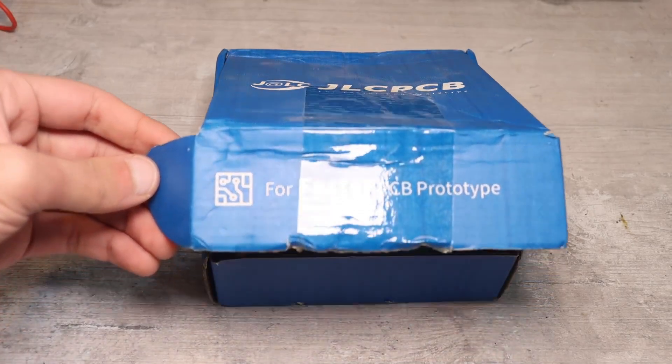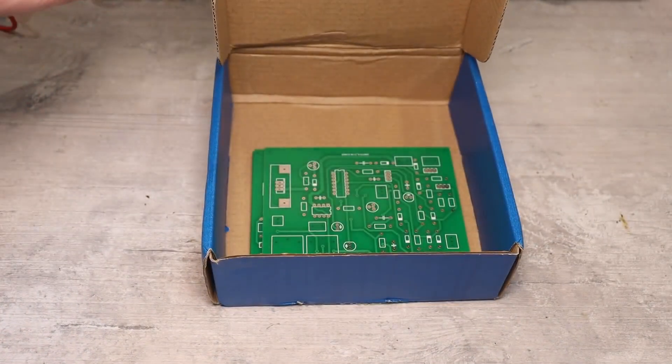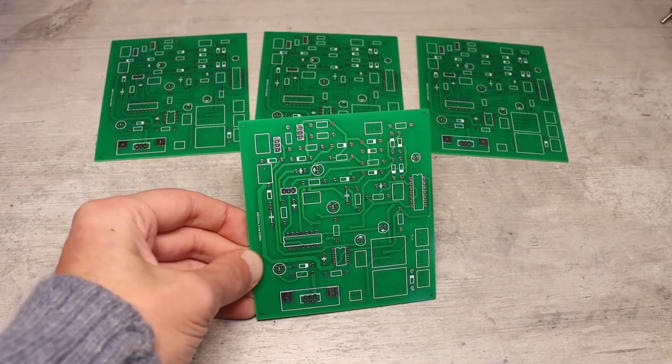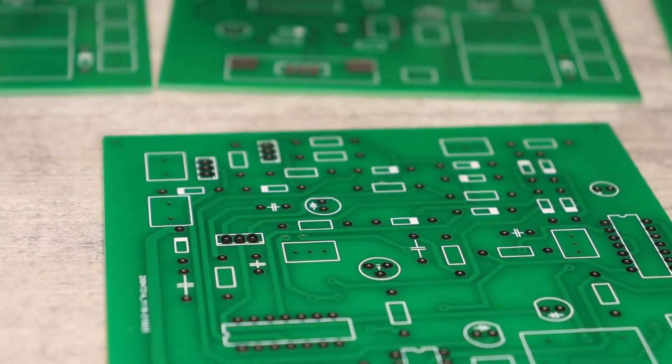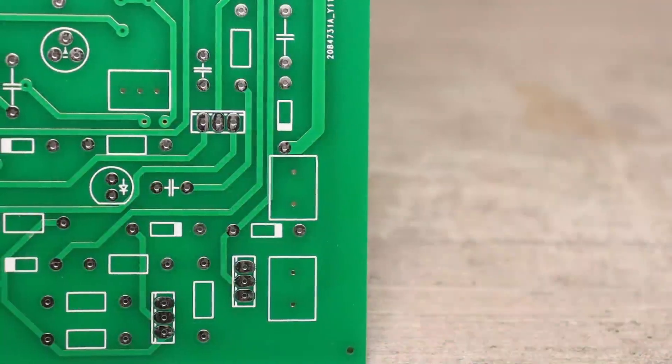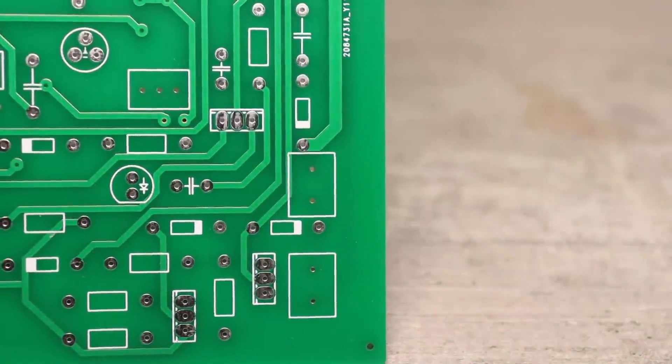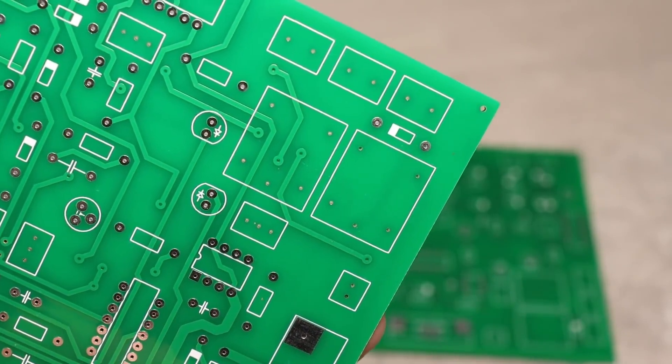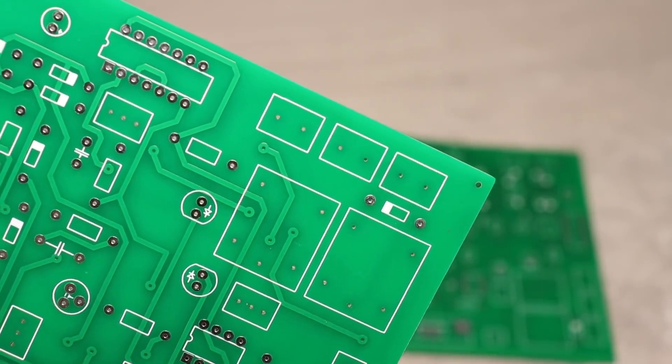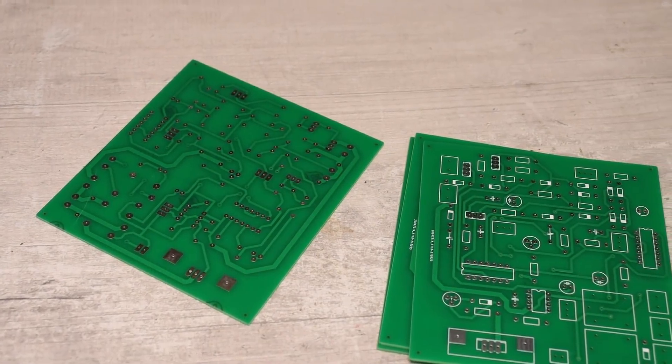Upon receiving them, it became clear that the boards, as always, are high quality. But during the generation of the Gerbers, something went wrong, and some holes are much smaller in diameter than needed. Fortunately, these holes were not vias, so I widened them with a regular drill and started assembling the board.